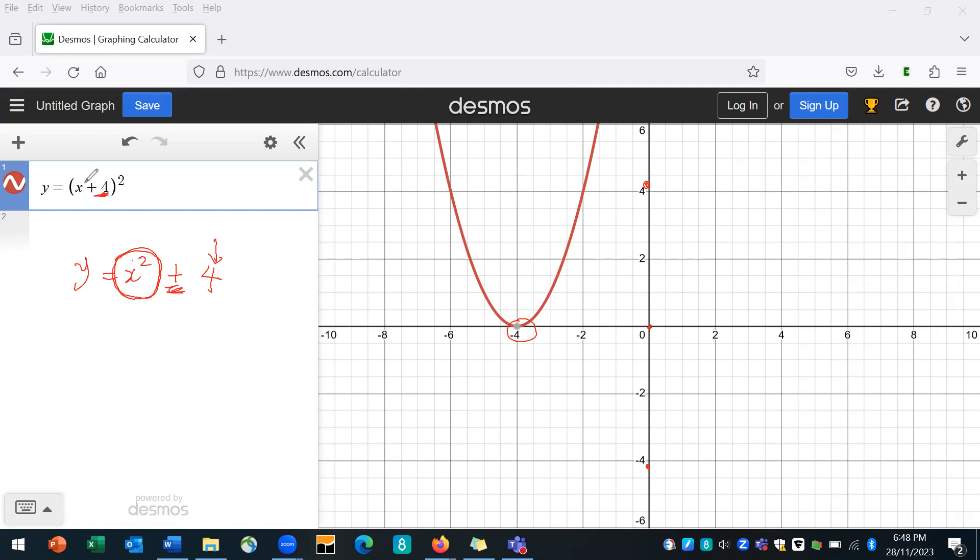When you add something to x, then it moves along the x-axis. When you add something to y, it moves along the y-axis, which is vertically. So I hope that helps you understand transformation.